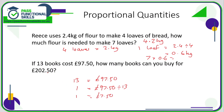So how many books can you buy for £202.50? We want to know how many 7.50s there are in £202.50. That calculation is £202.50 divided by £7.50, and the answer is 27. So we can buy 27 books.